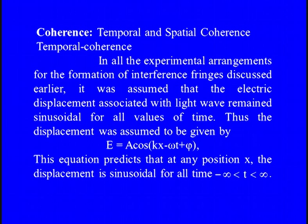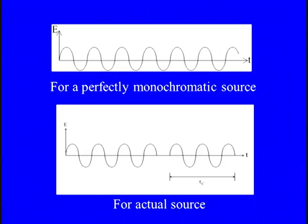Thus, the displacement was assumed to be given by E = A·cos(kx − ωt + φ). This equation predicts that at any position x the displacement is sinusoidal for all time, varying from minus infinity to plus infinity. For example, at x = 0, we have E = A·cos(ωt − φ), and the variation of E with time forms an infinite wave train as shown in the figure. However, this results only from a perfectly monochromatic source, and this corresponds to an idealized situation because the radiation from an ordinary light source consists of finite-size wave trains.